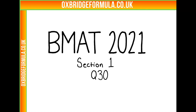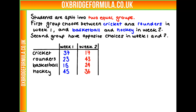This is BMAT 2021, Section 1, Question 30. We have a group of students split into two equal groups. The first group can choose between cricket and rounders in week 1, and then basketball and hockey in week 2. The second group have the opposite choices: basketball and hockey in week 1, and cricket and rounders in week 2. Here is a table based on the number of people who picked each sport in weeks 1 and 2.